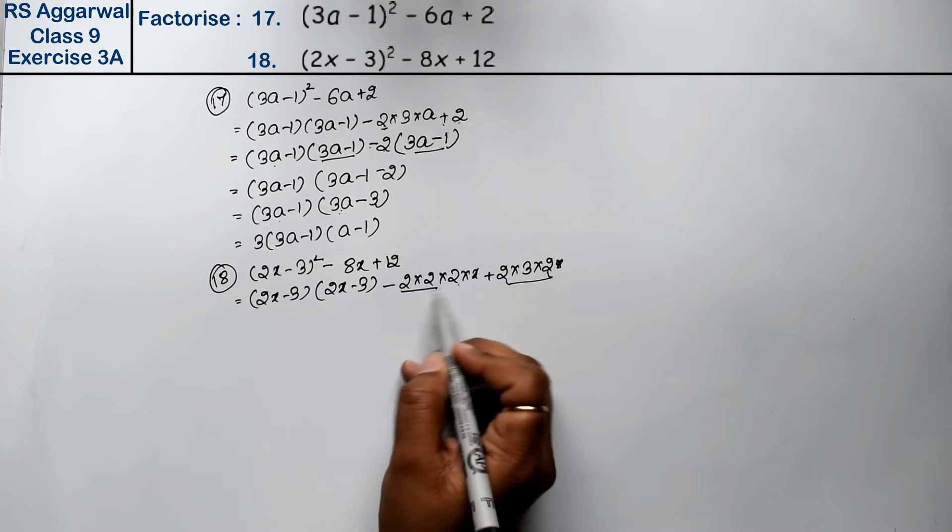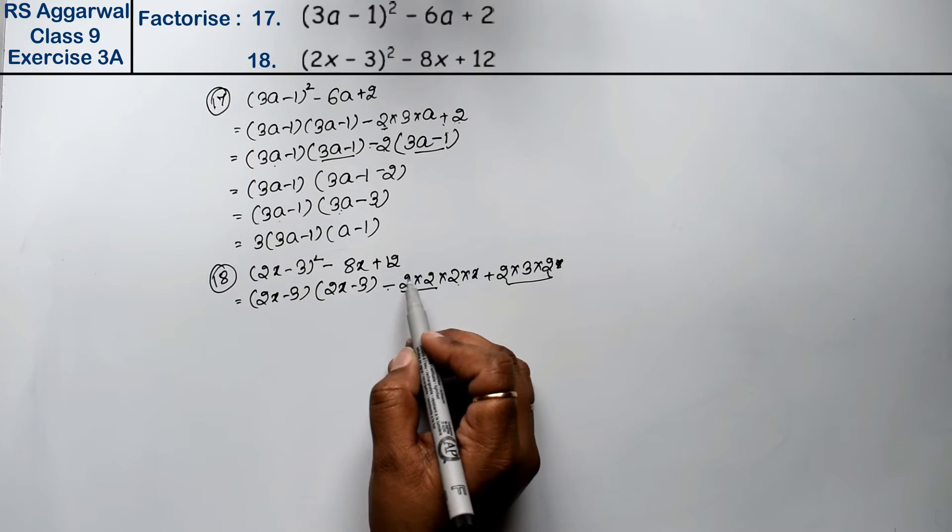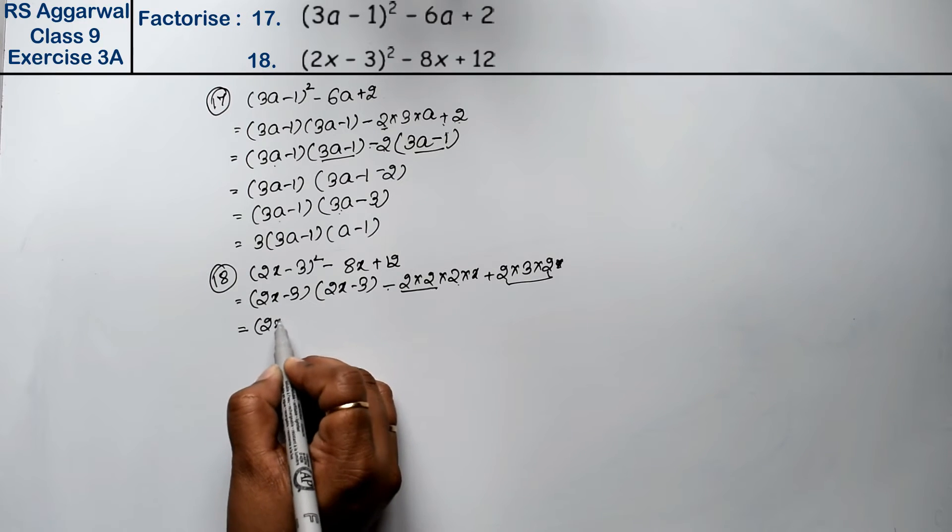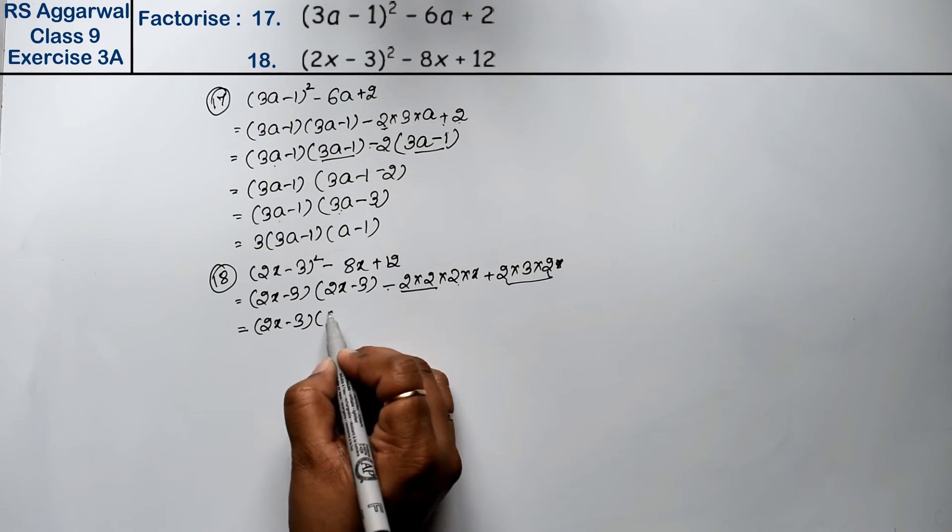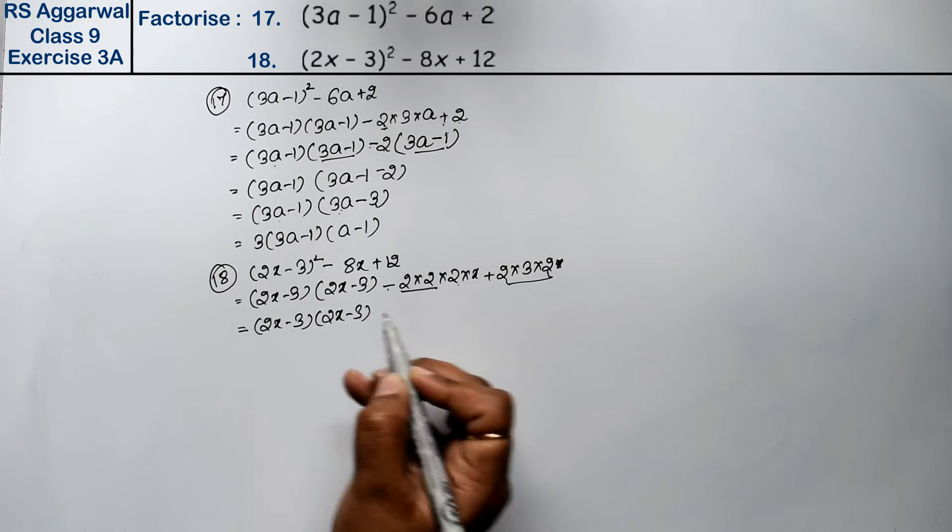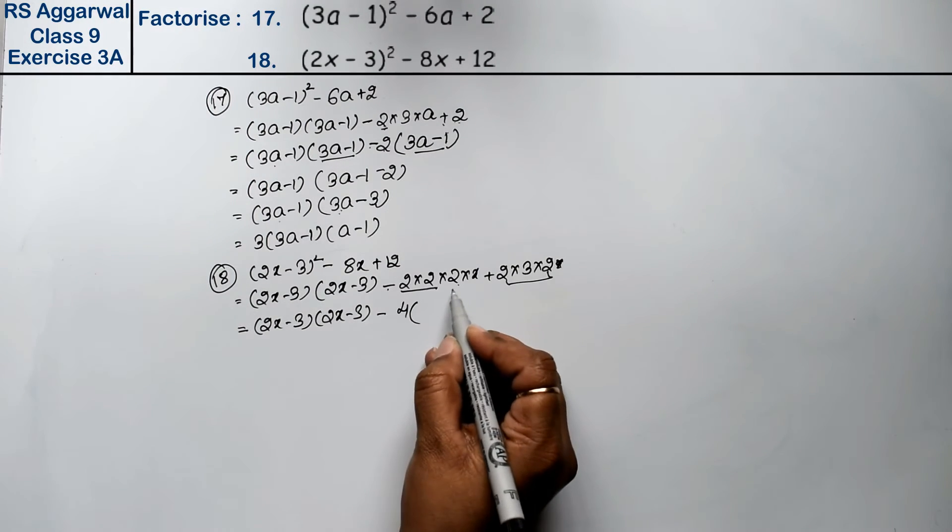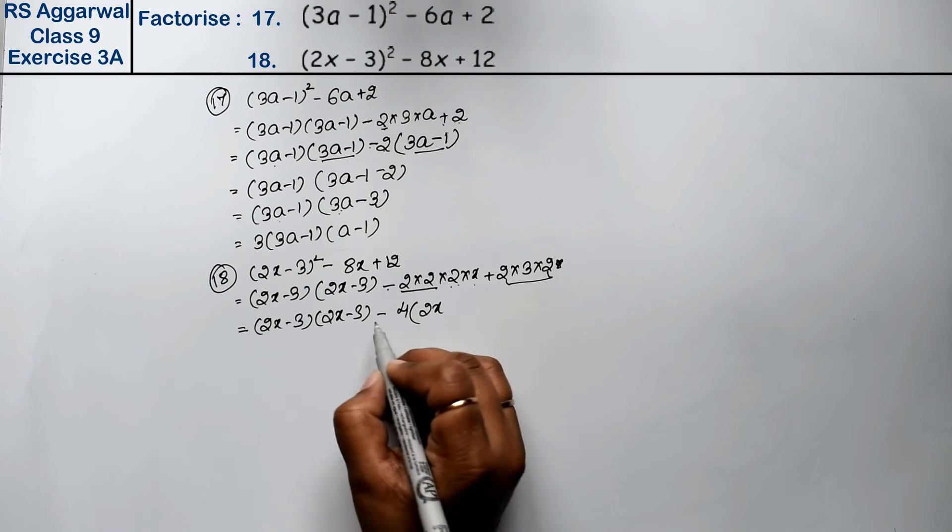Now this is (2x - 3), (2x - 3), (2x - 3), minus. From this, 4 comes as common. So what remains? This 2x remains. Now look, we can take minus outside.